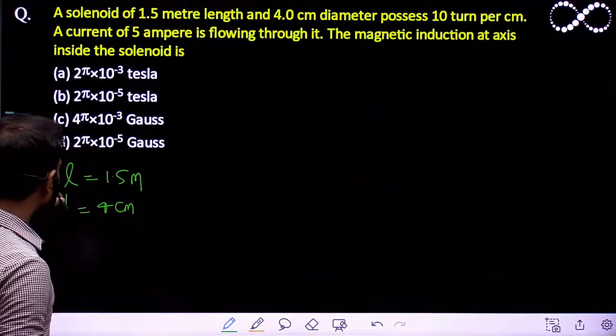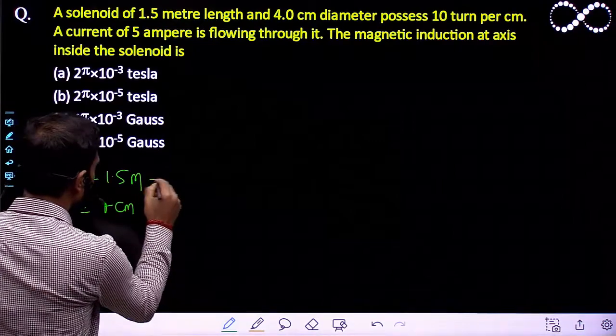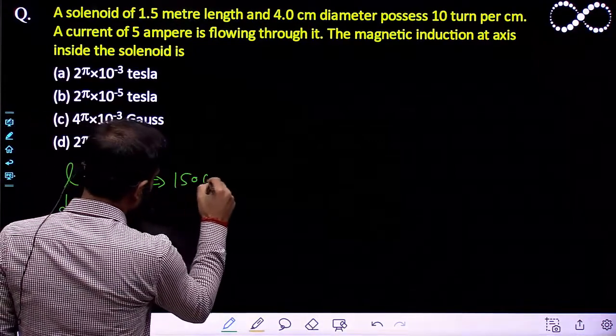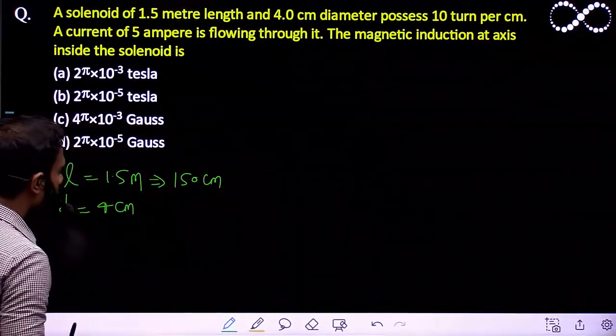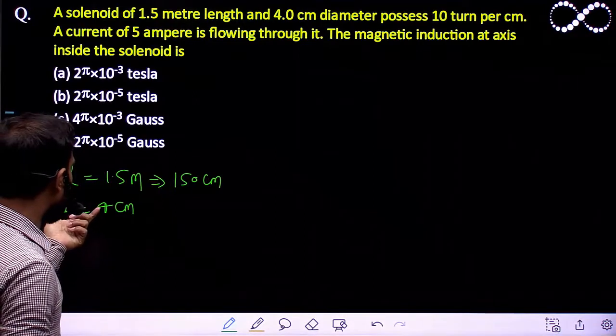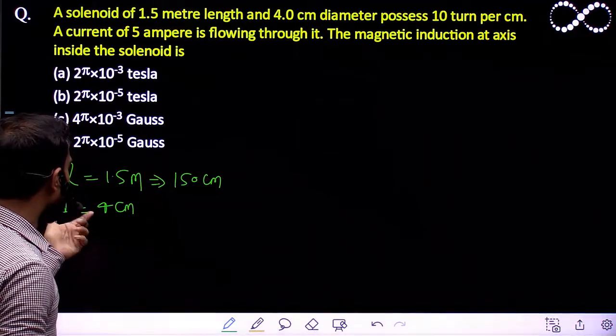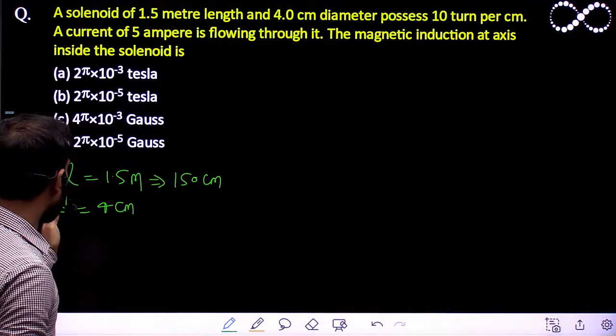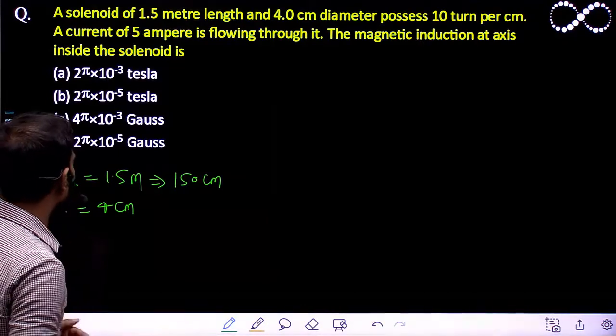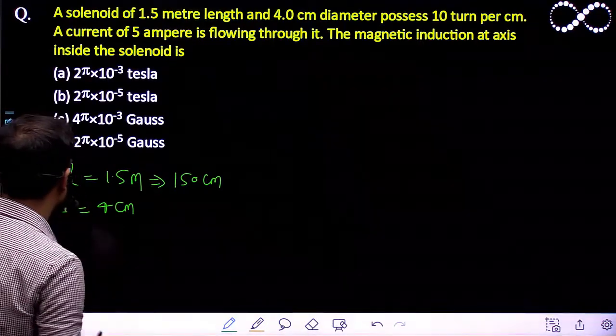With this information we can see the length is about 150 centimeter and the diameter is 4 centimeter. Obviously the length of solenoid is very large as compared to the diameter of the solenoid. You can assume this one as long solenoid.